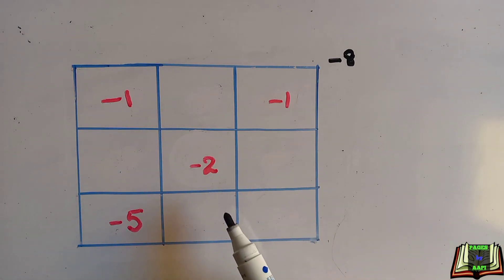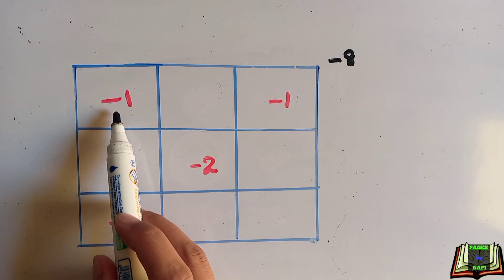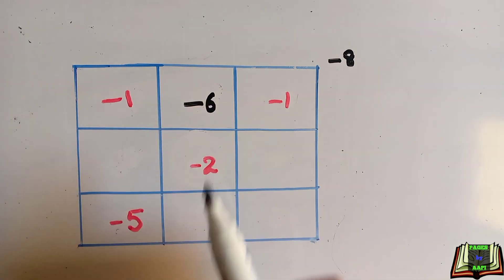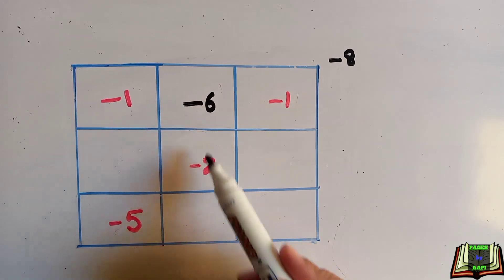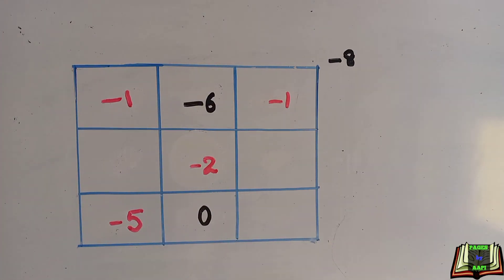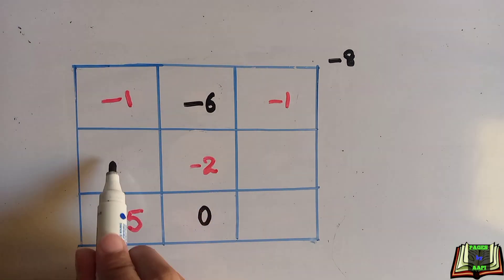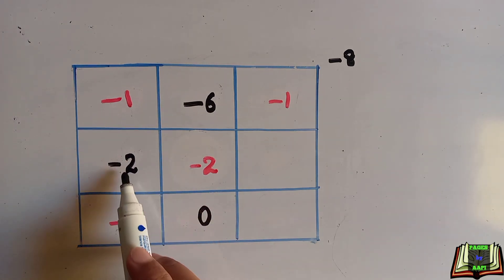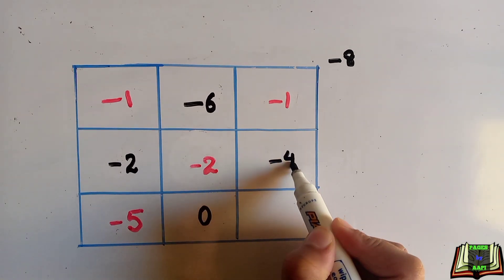Now we solve the remaining rows, columns, and diagonals to satisfy the magic square condition. In this row, minus 1 and minus 1 gives minus 2, so we add minus 6. Minus 6 and minus 2 makes minus 8. In this column, minus 5 and minus 1 gives minus 6, so we add minus 2 to make minus 8. In this row, minus 2 and minus 2 makes minus 4, so we add minus 4 to make minus 8.